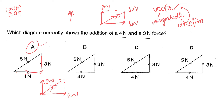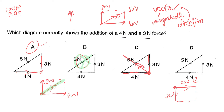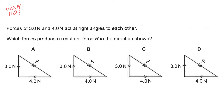For option B, the resultant force should be diagonally to the right, but it's pointing downwards — that's impossible. For option C, with three newtons upward and four newtons to the left, the resultant is in a different direction, so C is wrong. For option D, with four newtons and three newtons downwards, the resultant is diagonally downwards, making that direction wrong too.